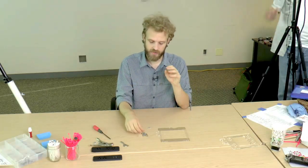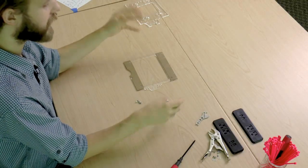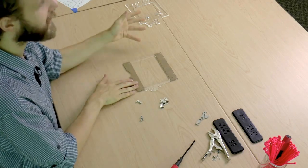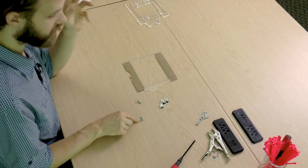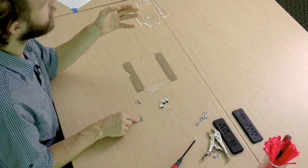First let's attach the clips to the top part of the bed assembly. You're going to need the clips, three clips, the top part of the bed assembly or the Y assembly, five nylon lock nuts and five flathead M3 by 8 bolts.